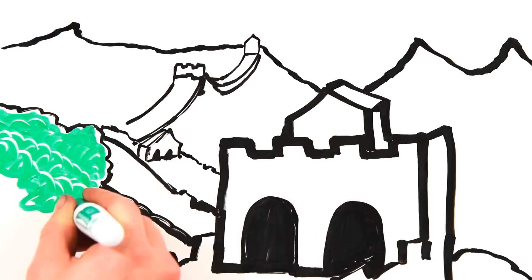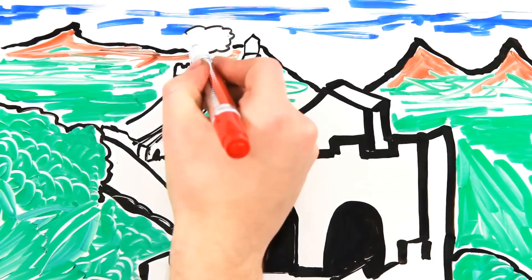By the way, you can't actually see the Great Wall of China from space. You can, however, see the air pollution.